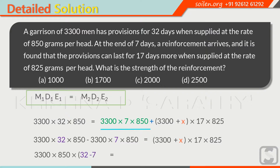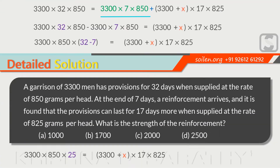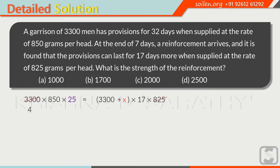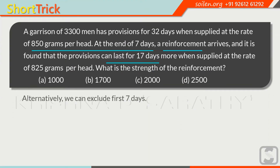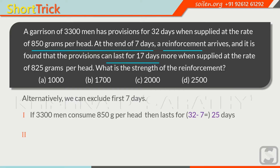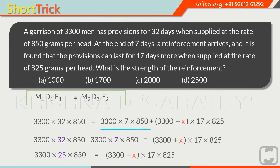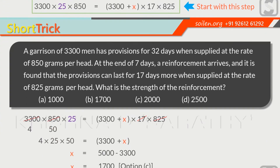On the left side, take out 3300 and 850 as common factors. Then, 3300 divided by 825 equals 4 and 850 divided by 17 equals 50. On the left side we have 4 × 25 × 50 = 5000, and on the right side we have 3300 + X. So X = 5000 − 3300 = 1700. Alternatively, we can exclude the first 7 days: if 3300 men consume 850g/head, provisions last 32 − 7 = 25 days; then apply the formula directly to save time. All remaining steps are the same.